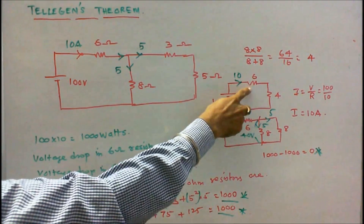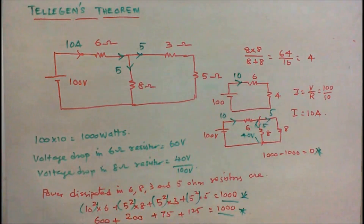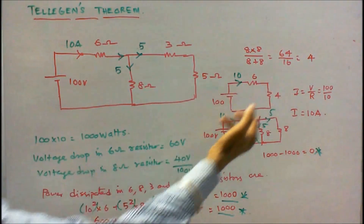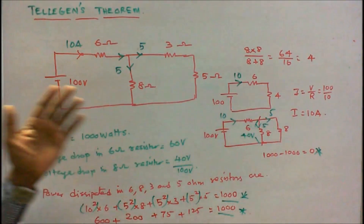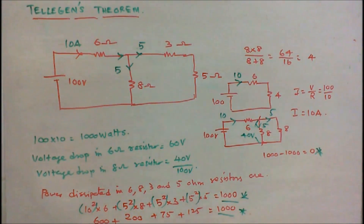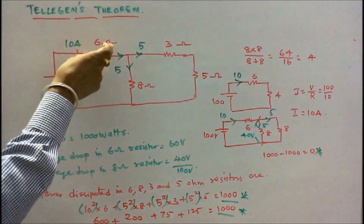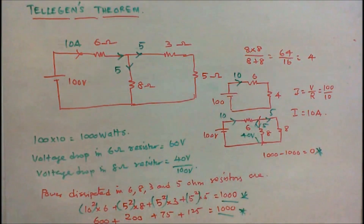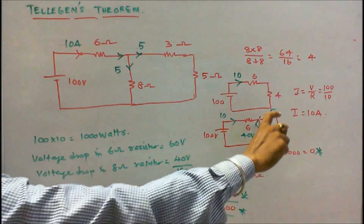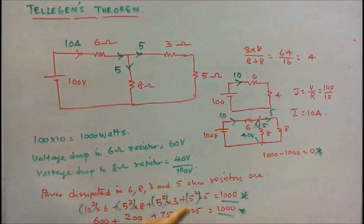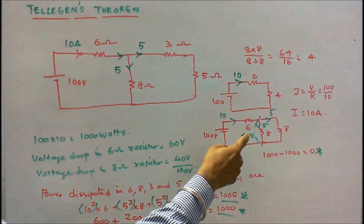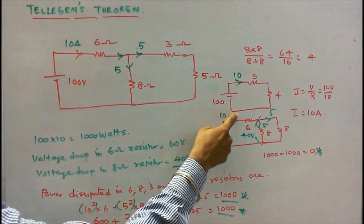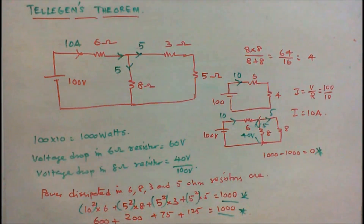The 4 ohm resistor is in series with the 6 ohm resistor: 6 plus 4 equals 10. The total resistance is 10 ohms. We know the voltage is 100, so I = V/R = 100/10 = 10 amps. Current supplied by the battery is 10 amps. The voltage drop across the 6 ohm resistor is 6 into 10, equal to 60 volts. 100 minus 60 equals 40 volts, which appears across the 8 ohm resistors. Since these two 8 ohm resistors are in parallel, voltage is constant, so I = 40/8 = 5 amps for each. Current towards the junction is 10; current leaving the junction is 10. Kirchha's current law is verified.